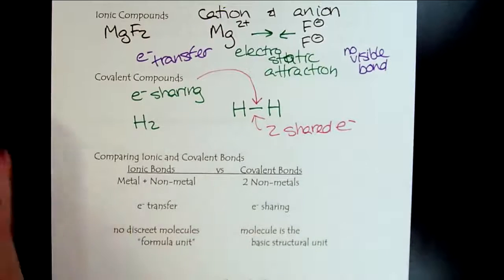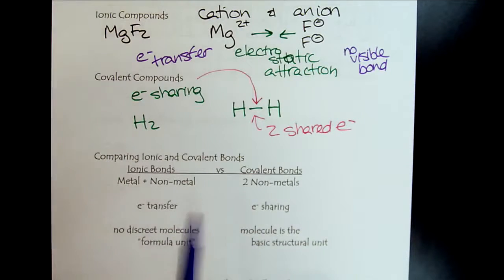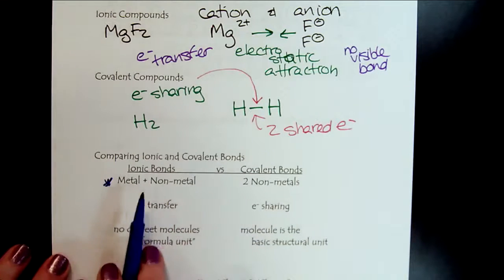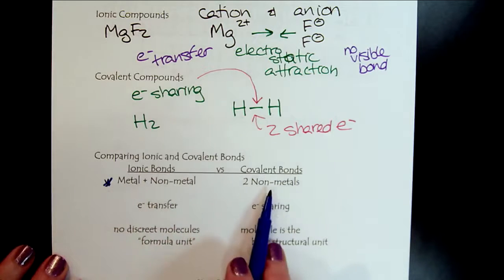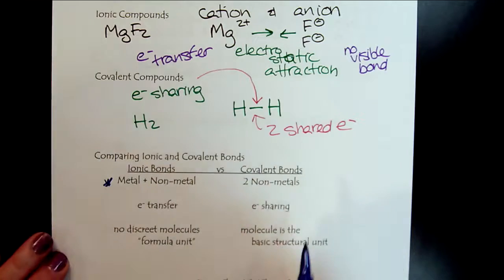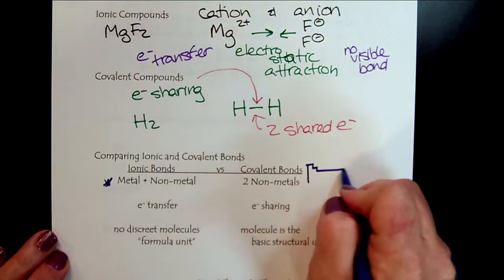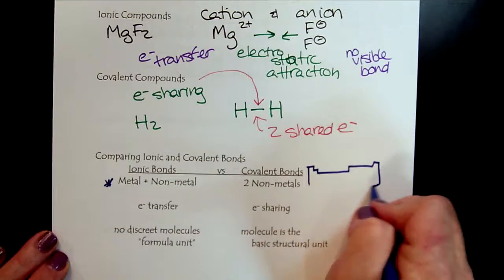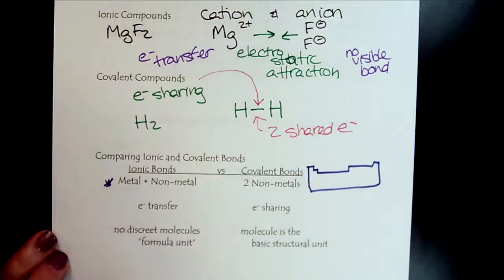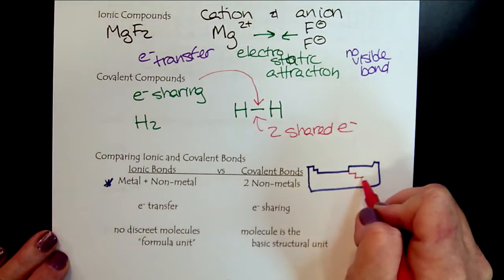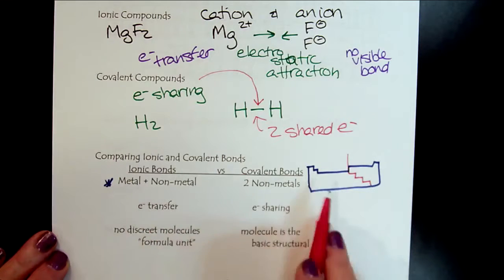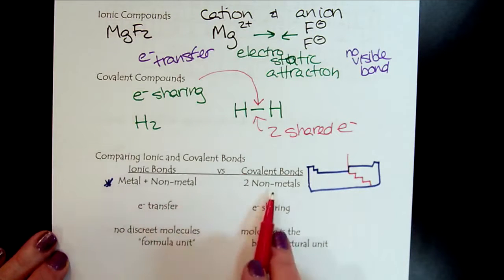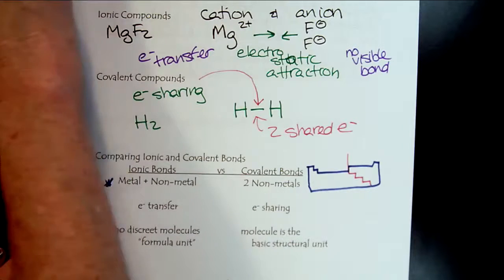The stair-step line is a really big deal because ionic compounds are going to have the metal and the nonmetal, where covalent compounds are only going to have two nonmetals. So remember, the first thing we want to do when we look at a compound is look at the elements in play and see whether we have metals and nonmetals or two nonmetals.